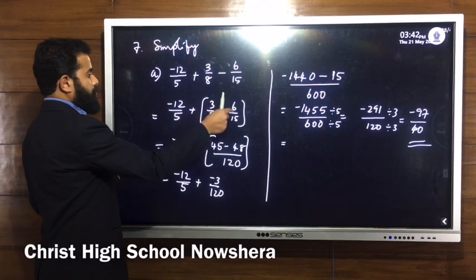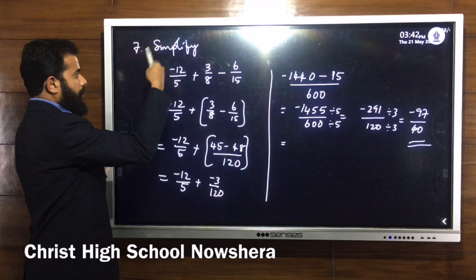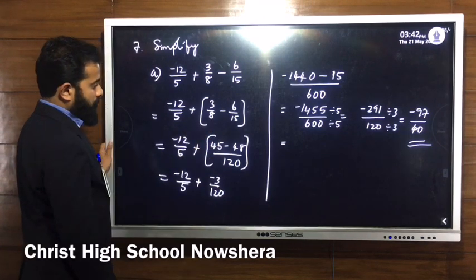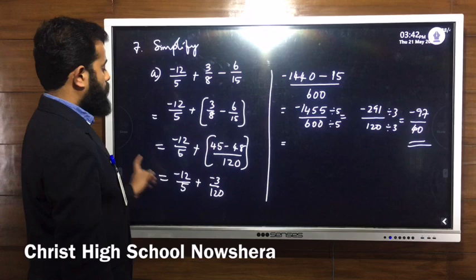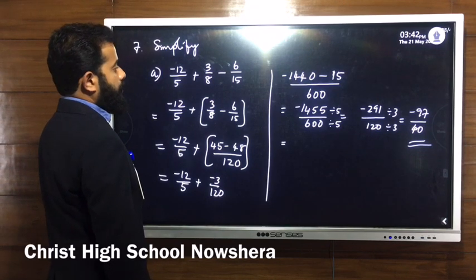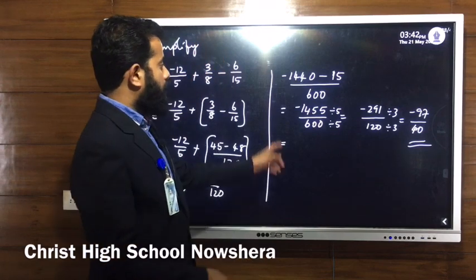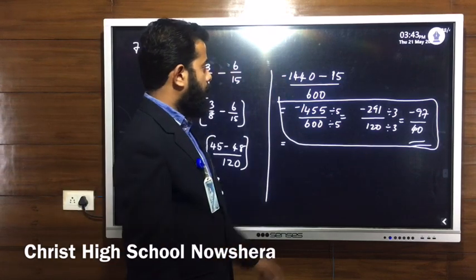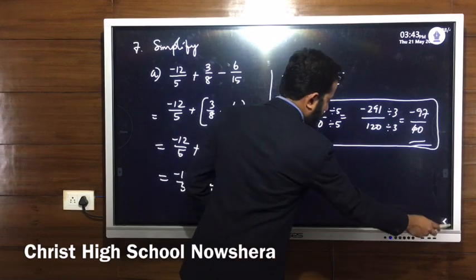We do 3 by 8 minus 6 by 15 first, giving 45 minus 48 divided by 120. Then add minus 12 by 5 by cross multiplication, giving minus 1440 minus 15 divided by 600. Then simplify to standard form by finding common factors and dividing both numerator and denominator. The final answer is minus 97 divided by 14. Always express your answer in standard form.